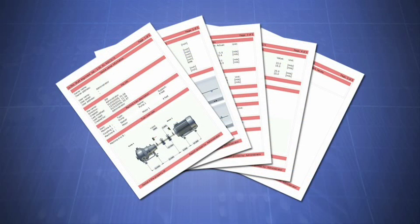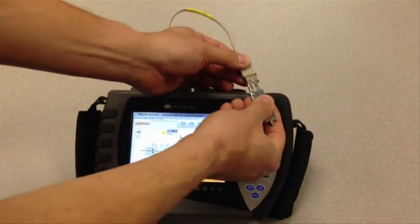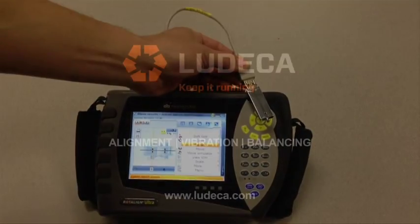Once your spacer shaft alignment is completed, simply print your detailed full-color alignment report to your flash drive to document the successful completion of your alignment.